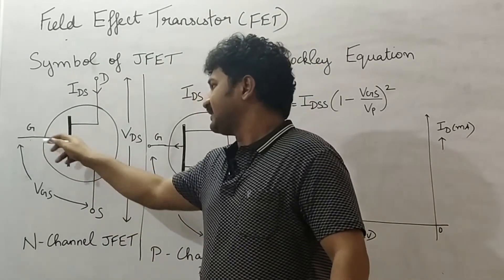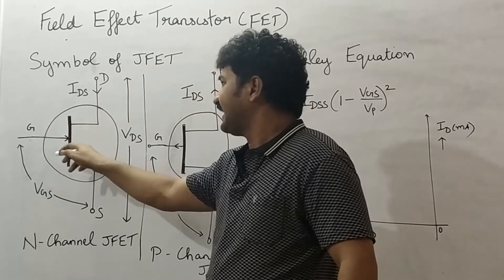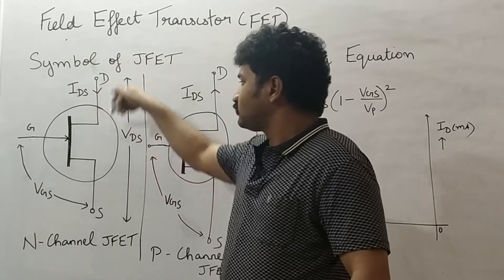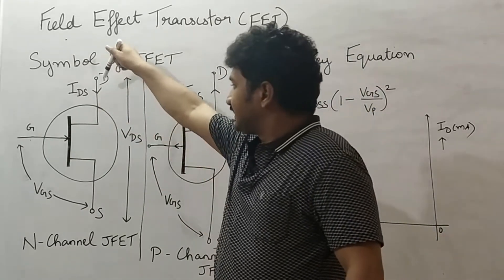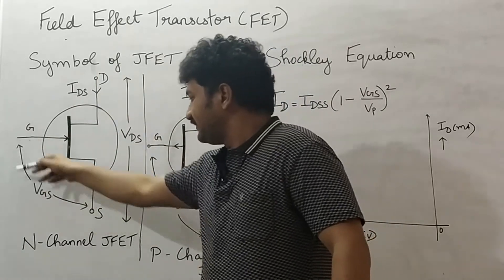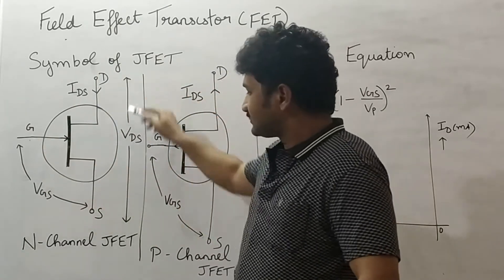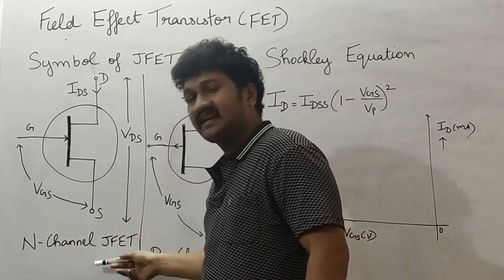If you see the direction, this direction is the flow of gate current and this is drain to source current. This direction is downwards and this is inwards. This is VGS, gate to source voltage, and this is drain to source voltage. This is N channel JFET.